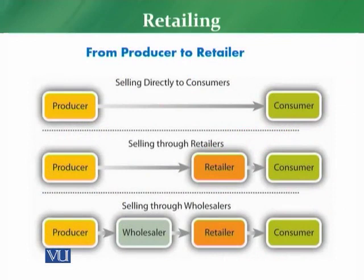I will take you to a diagram which will explain different journeys that a producer will follow to reach its customer. First of all, selling of products directly to the consumer — in the first part, you can see a producer which is directly approaching a consumer. For example, if you see there is a honey seller — he is a producer at that time, and at the same time, if he is selling directly to a customer, so that producer will also be considered as a retailer.